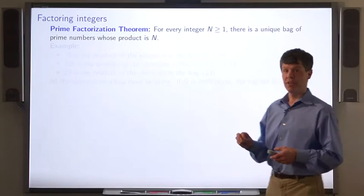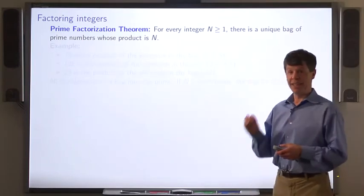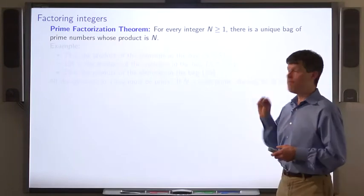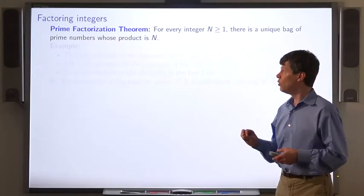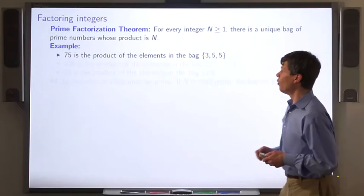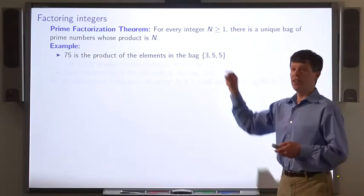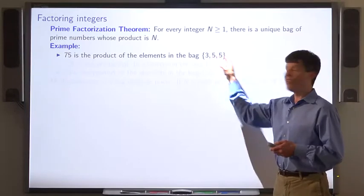The prime factorization theorem states that for every integer n greater than or equal to 1, there is a unique bag of prime numbers whose product is n. For example, the integer 75 is the product of the integers 3, 5, and 5.